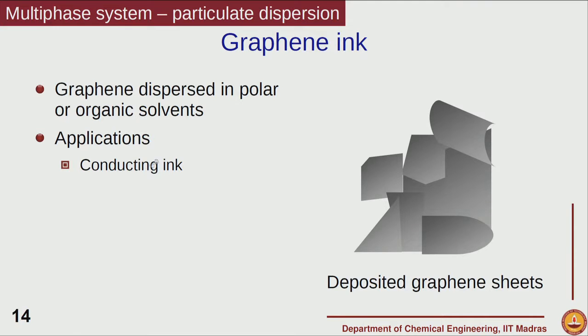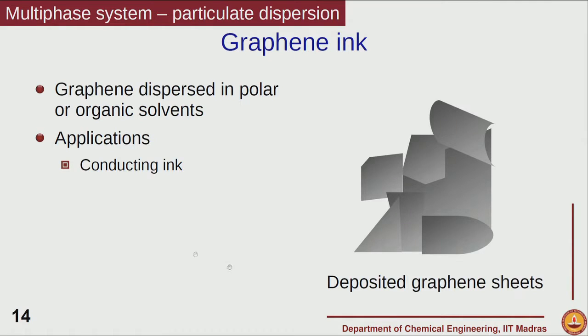There are several applications in which graphene ink is useful because graphene is a conducting material with very interesting properties. As a sheet-like material, when it deposits it can form contacts and lead to high conductivity. The rheology of conducting ink will be very important during the processing stage — the ink has to flow out of whatever printing or coating device is being used.